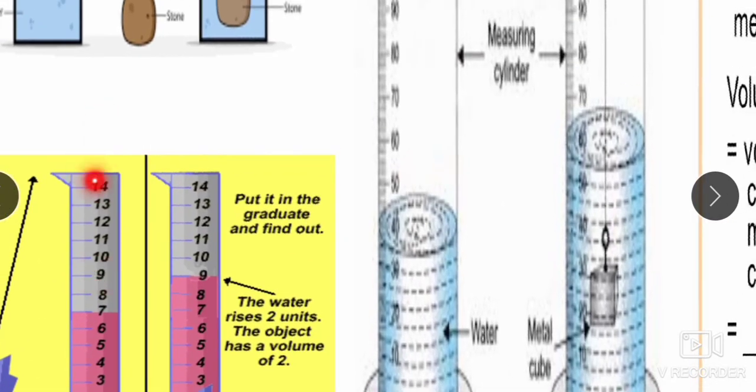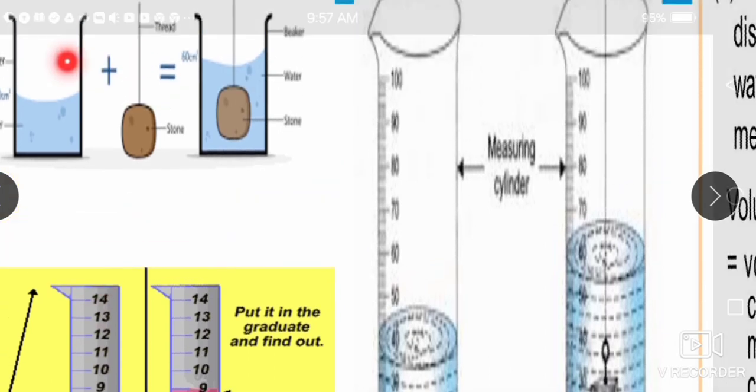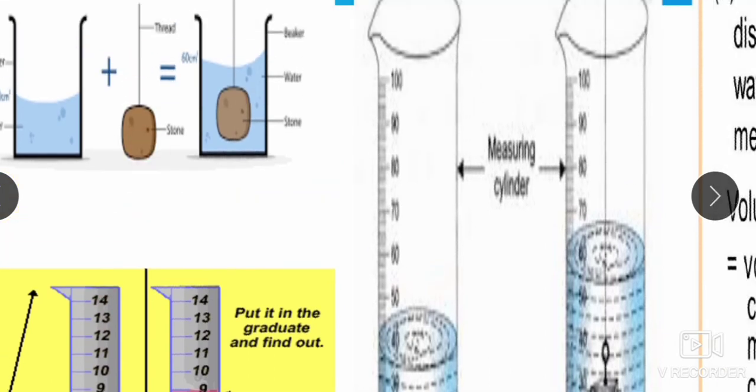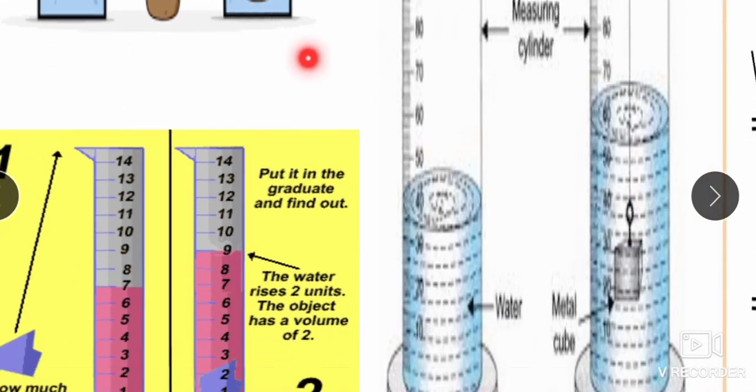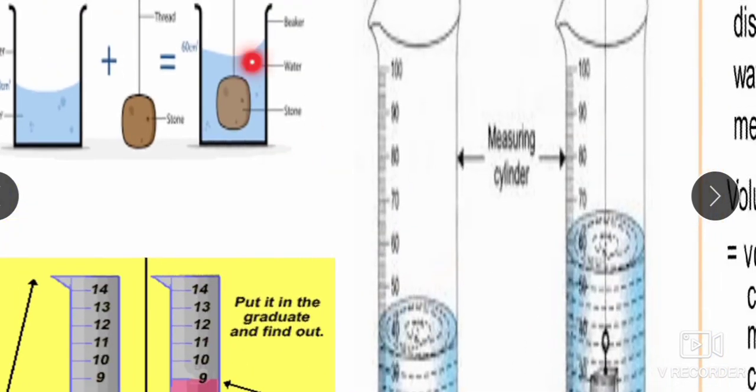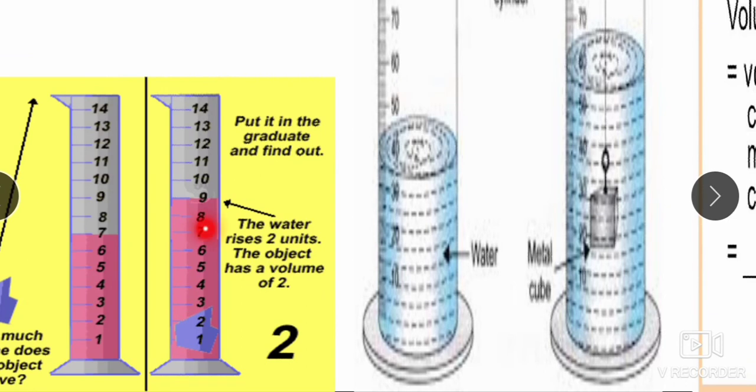We can also use two cylinders, one with a tap, to measure the volume of an irregular shape object. Consider two measuring cylinders. One cylinder is kept under the tap of another cylinder. Now let us dip the irregular shape object, for example a stone. Liquid level will increase. The increase in the level is the volume.